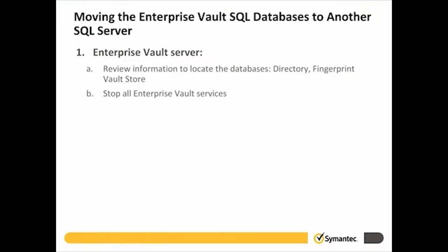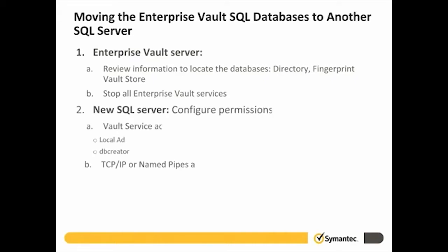On the new SQL Server, we will configure the proper permissions and protocols for Enterprise Vault to communicate with SQL. First, we'll ensure the VSA is a local admin. Next, we will ensure the VSA is assigned to the DB Creator role within SQL. And lastly, we will ensure that either TCP/IP, named pipes, or both are enabled.